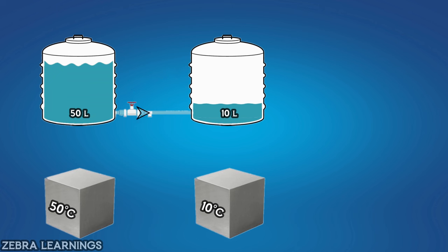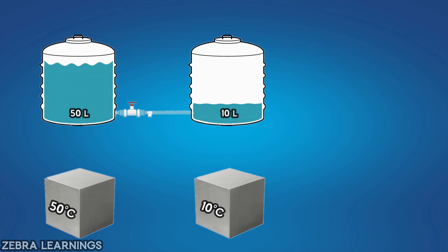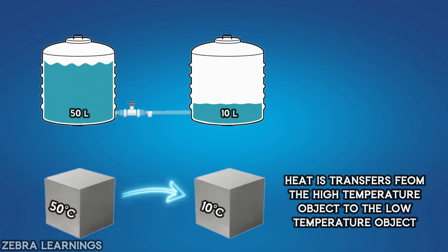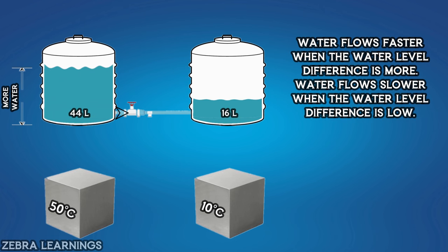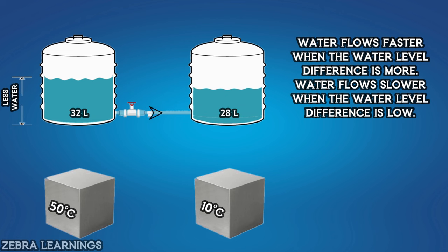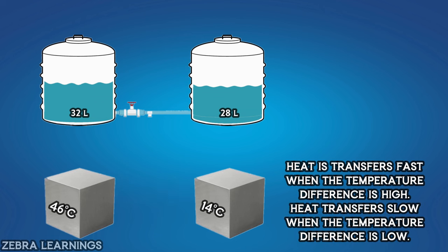Water will flow from the tank with 50 liters to the tank with 10 liters — that is, from the tank with more water to the tank with less water. Similarly, when these objects are placed close together, heat is transferred from the object with the higher temperature to the object with the lower temperature. When there is more water in the tank, the water flows faster. When the amount of water decreases, the flow rate also decreases. Similarly, when the temperature difference is high, the heat transfer is faster. When the temperature difference decreases, the heat transfer rate also decreases.